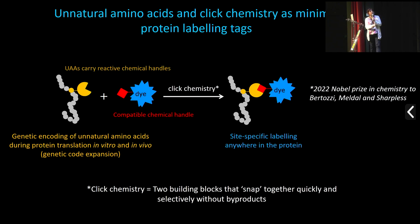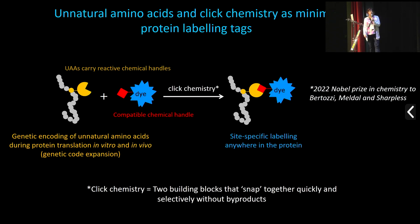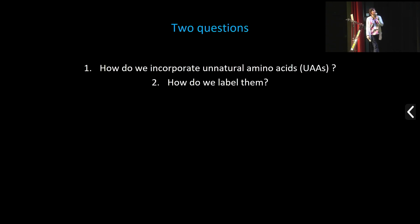In the second step, you use click chemistry — reactions that allow you to bring two building blocks together very quickly and selectively. These click chemistry reactions won the Nobel Prize in Chemistry last year. They were not originally developed for fluorescent protein labeling but for combining different building blocks together. They are now used not only for protein labeling but also for labeling other types of biomolecules, because you can combine these small groups anywhere in your protein of interest, enabling site-specific labeling.